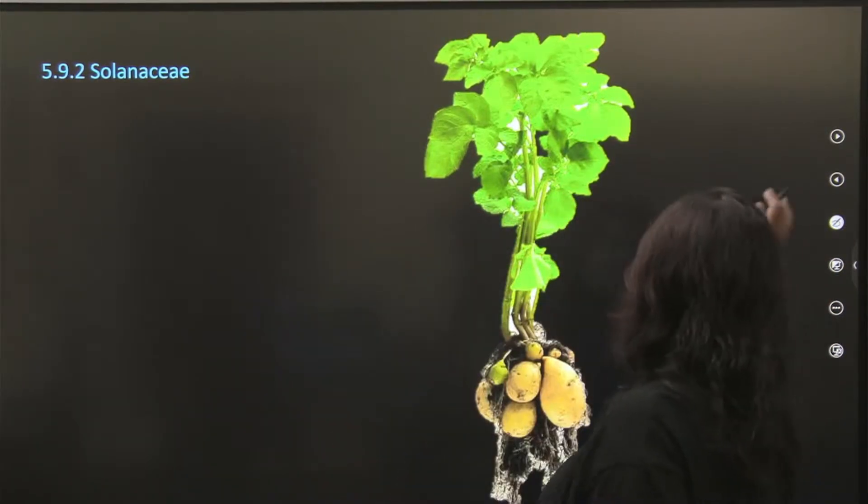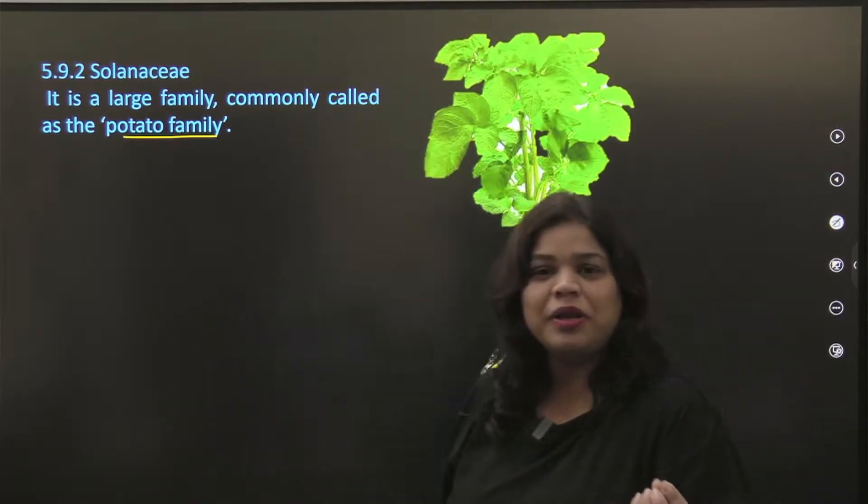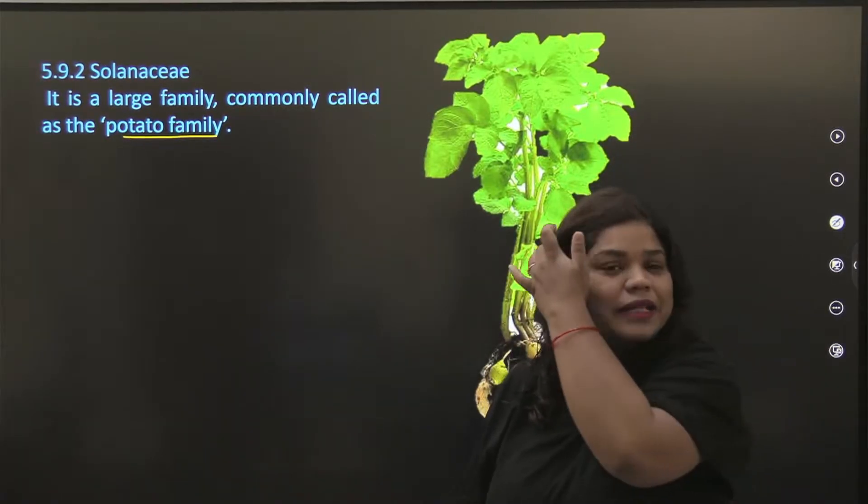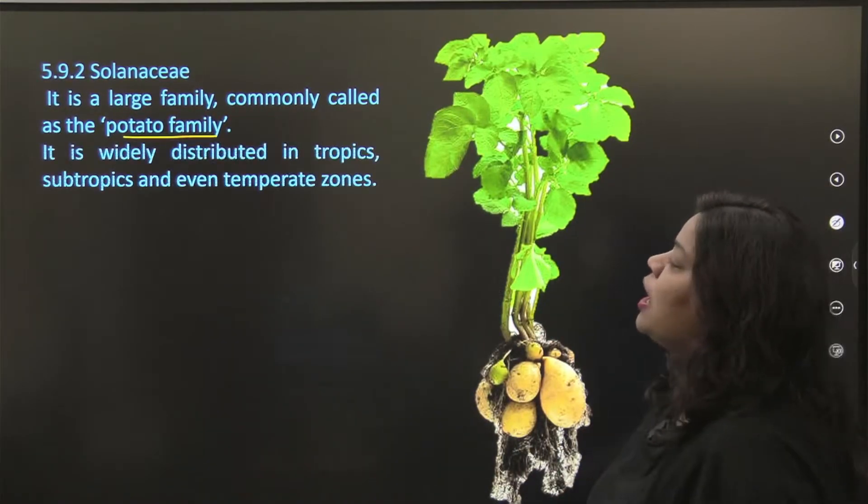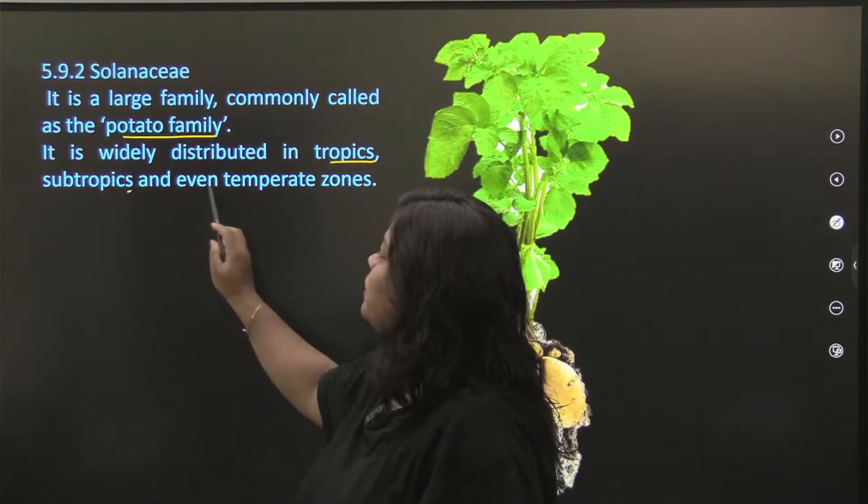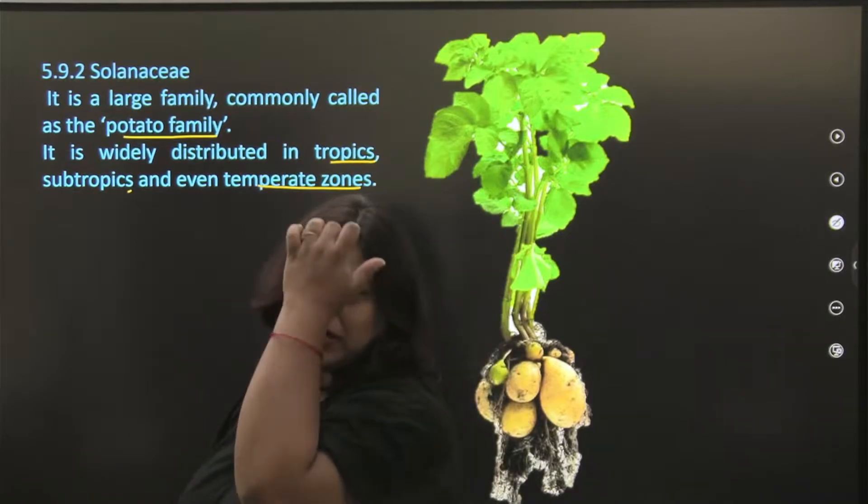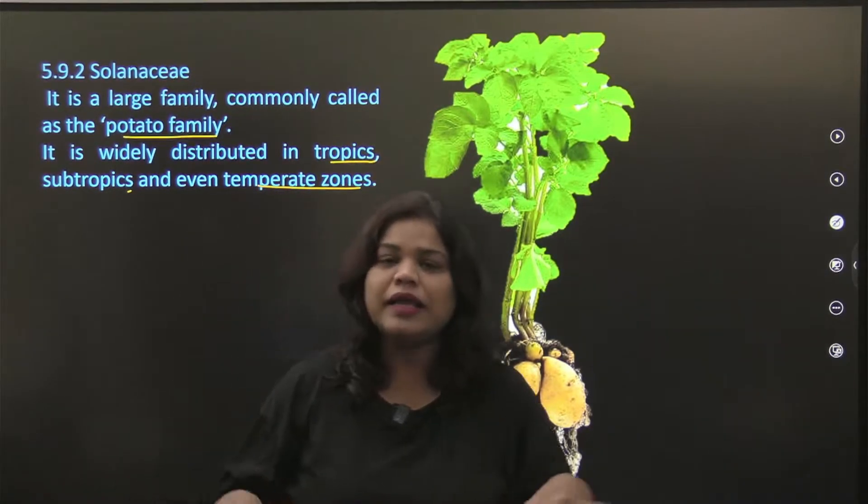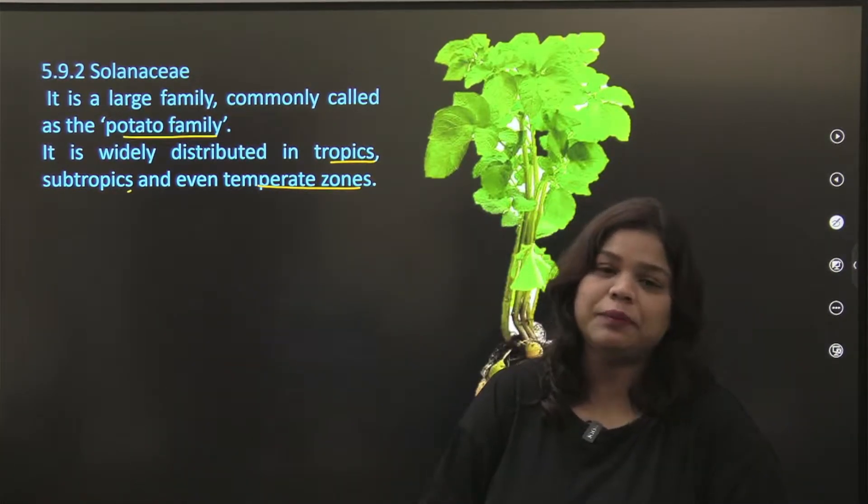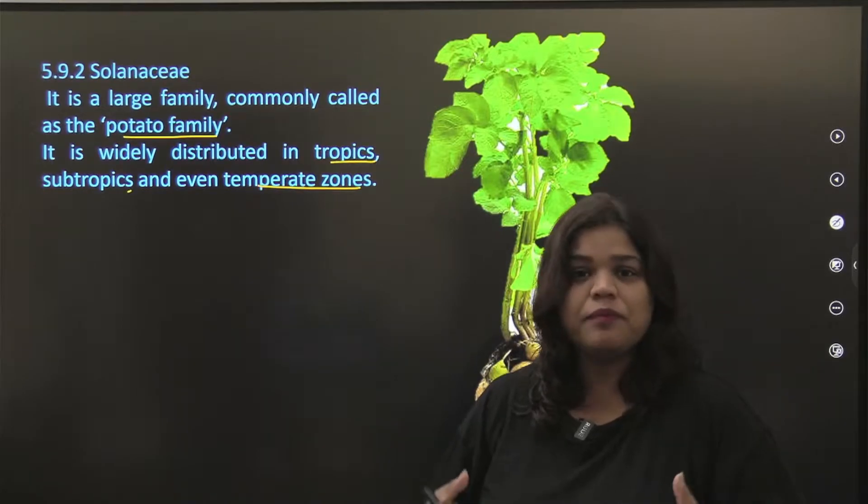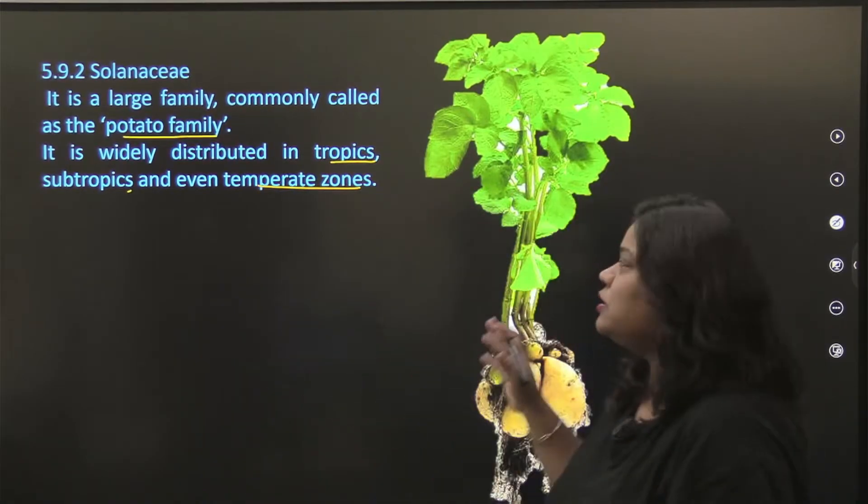We are family Solanaceae. It is a large family commonly called as the potato family. The name of the family is your potato family, aloo's family. It is widely distributed in tropics, subtropics and even temperate zones. Tropical lands which are your tropical nations - Brazil, Peru, Argentina, India also. In these areas you will get aloo very prominently. In Mexico, if we talk about every place, potato is grown every single nation nowadays.